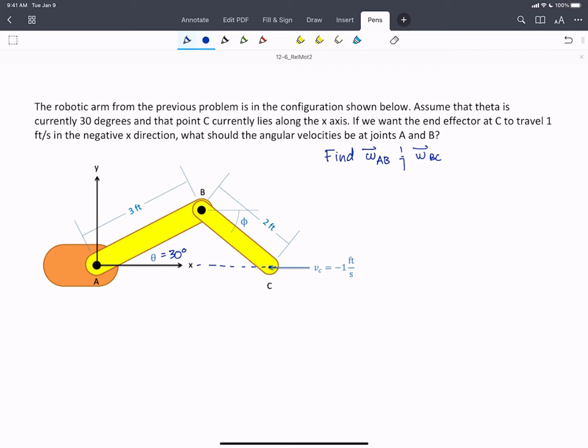So let's start with what we know. We know that VA equals zero. We know that VC is going to be minus 1 feet per second in the i-hat. And we know that RB with respect to A is going to be 3 feet cos 30 i-hat plus sine 30 j-hat. We don't know what RCB is yet. We have to do a bit of geometry for that.